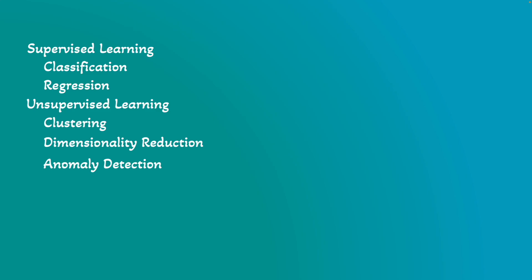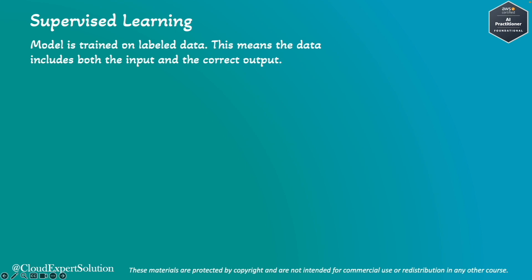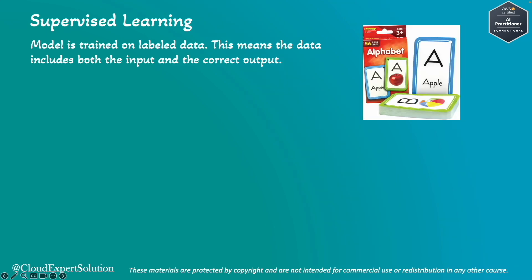Let's start with supervised learning. In supervised learning, a model is trained on labeled data, meaning the data includes both the input and the correct output. If I explain with an example, this is just like teaching a child with flashcards.